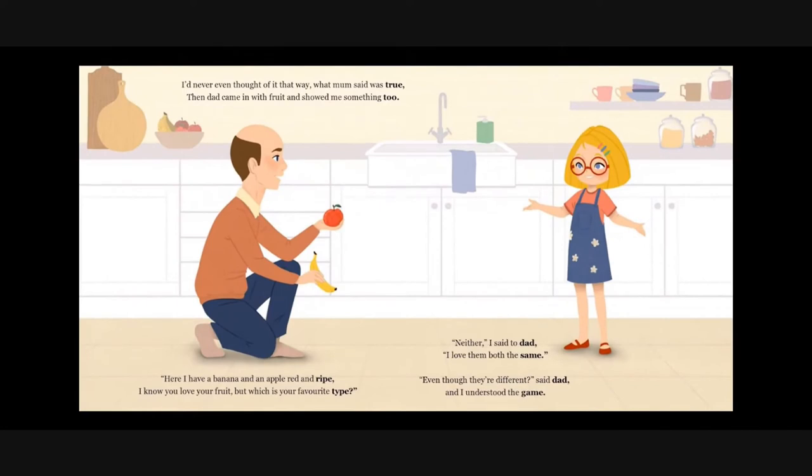Then dad came in with fruit and showed me something too. Here I have a banana and an apple, red and ripe. I know you love your fruit, but which is your favorite type? Neither, I said to dad. I love them both the same. Even though they're different, said dad, and I understood the game.